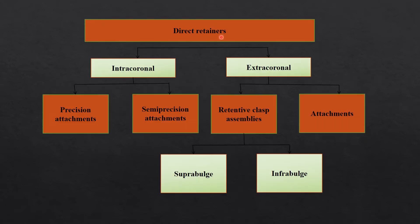Direct retainers — the clasp assembly — are broadly categorized into two categories: intra-coronal, that is within the contour of the tooth, and extra-coronal, which are placed outside the external contour of the tooth. Intra-coronal direct retainers are basically precision attachments and semi-precision attachments, either custom made in the laboratory or prefabricated — sold by brands such as Bredent, which is a famous brand that produces precision attachments.